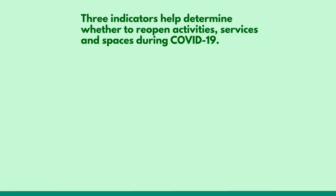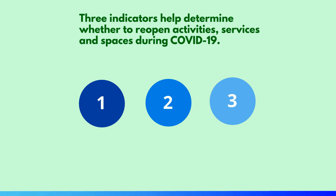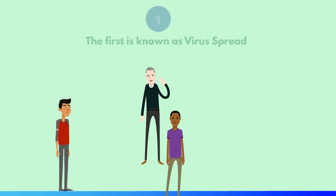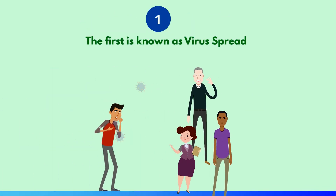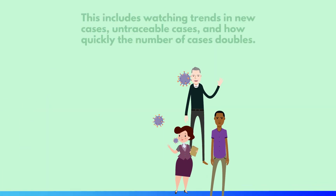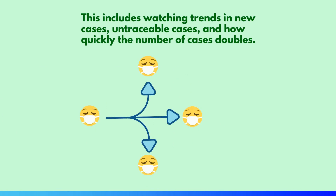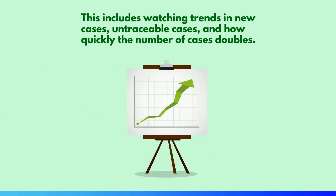Three indicators help determine whether to reopen activities, services and spaces during COVID-19. The first is known as virus spread. This includes watching trends in new cases, untraceable cases, and how quickly the number of cases doubles.